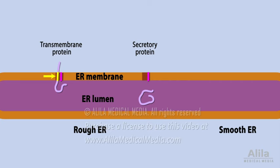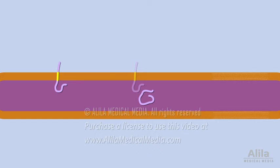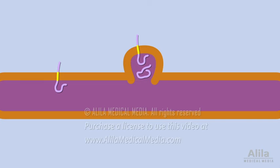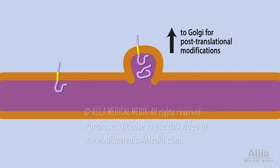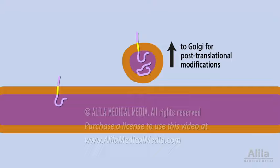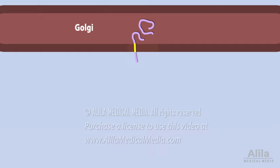The smooth part of the ER synthesizes lipids and lipid components of cell membranes. As lipids are produced, they are inserted into the ER membrane. Membrane proteins, lipids, and secretory proteins are then packaged into vesicles to be transported to the Golgi, where proteins undergo post-translational modifications. Vesicles pinch off from ER membranes, travel to the Golgi apparatus, fuse with Golgi membranes, and release their content.